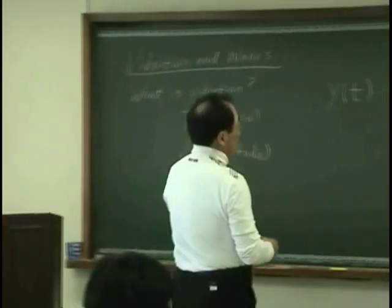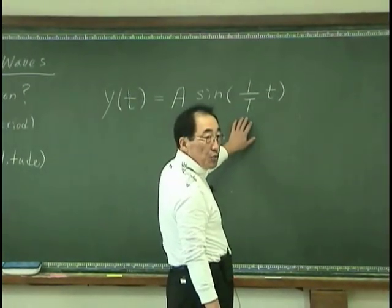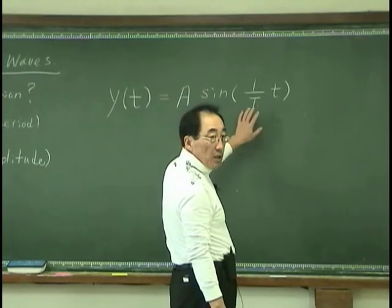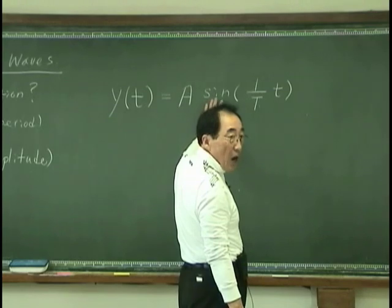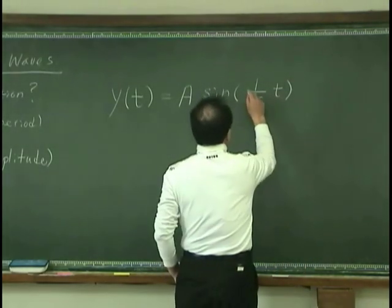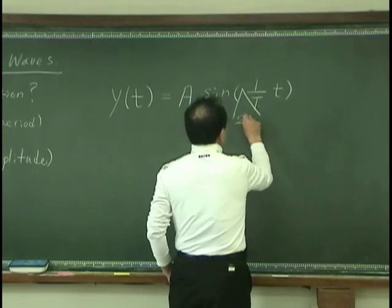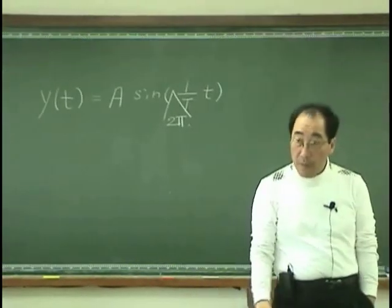So, this argument has to be written according to the definition of argument of sine. That's why we need 2 pi over here.